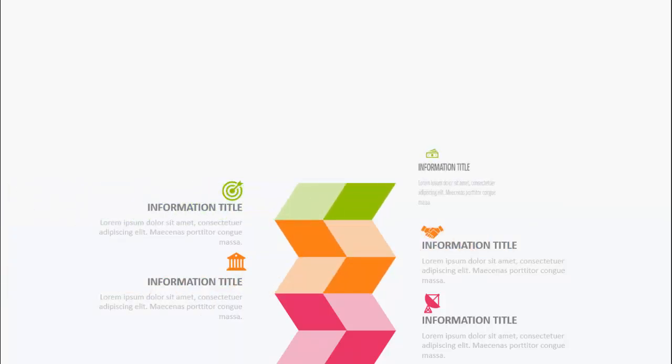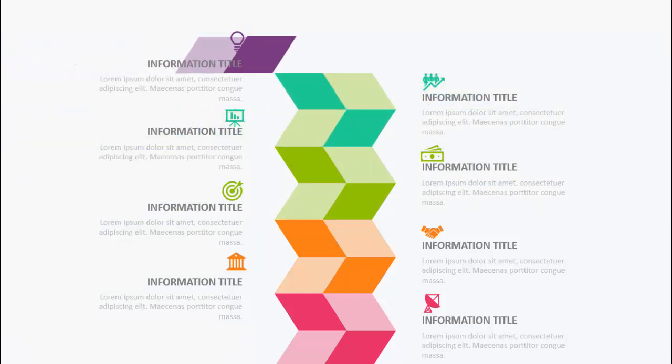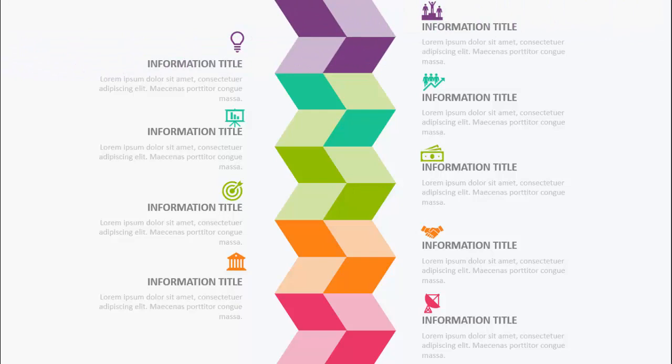In today's tutorial I'm going to show you how to create a nine colorful options infographic slide in PowerPoint. This is how the slide works — when I click, you can see I've created two different color tones, then the title along with the icon and the detail text. When I click the second option it comes with a different title, then the third, fourth, fifth, sixth — you can see it's getting different color combinations. So this is the nine options infographic slide.